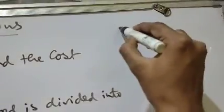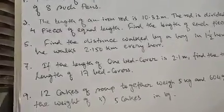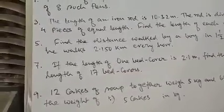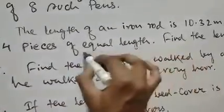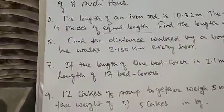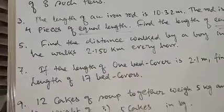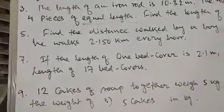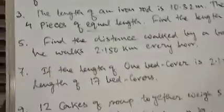Question number three: the length of an iron rod is 10.32 meters. The rod is divided into four pieces of equal length. Find the length of each piece. The rod is divided into four equal pieces, so the number of pieces is four. We have to find the length of each piece, meaning we divide 10.32 by four.